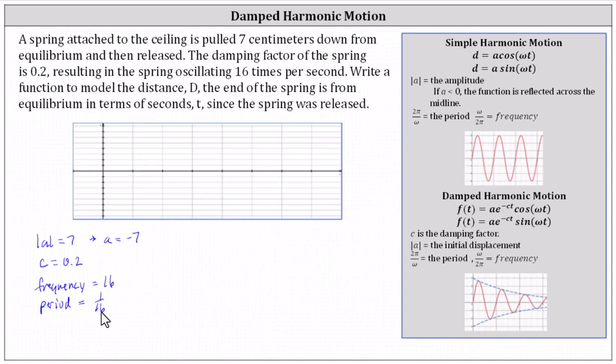And now we still need to find omega. Let's use the formula omega divided by two pi equals the frequency, which gives us omega divided by two pi equals 16. To solve for omega, we multiply both sides by two pi.